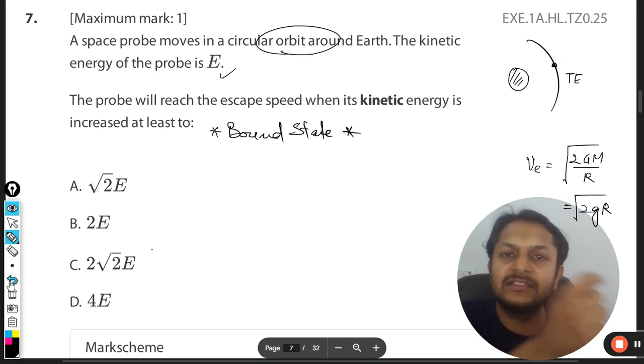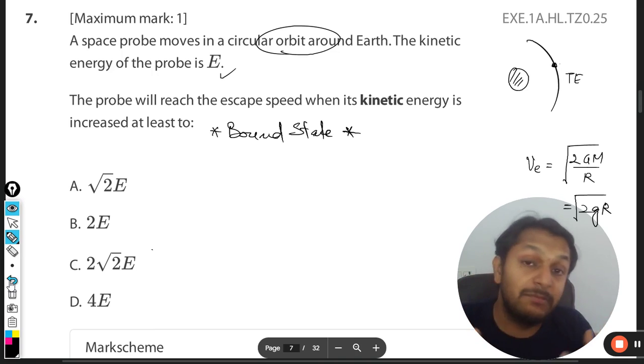If the energies of the satellite move according to the principles laid by bound state concept, then we will say that the satellite is bound to Earth. Otherwise it might be a rocket and it might fly away. There is no problem with that. They can fly away, but this satellite is not going to fly away because the energy of the satellite is...